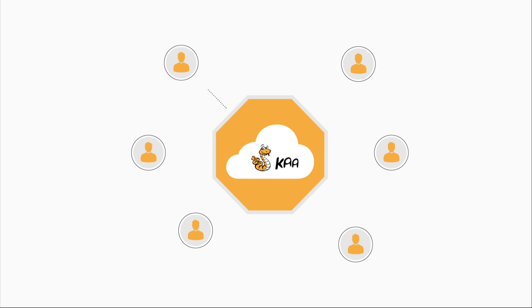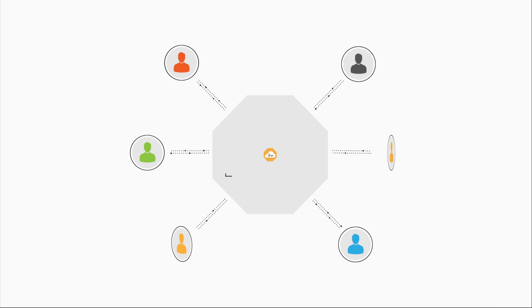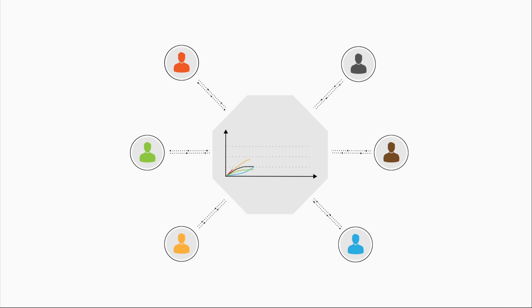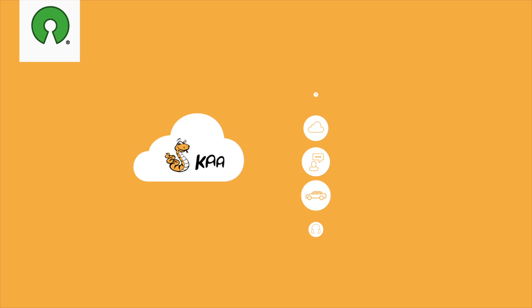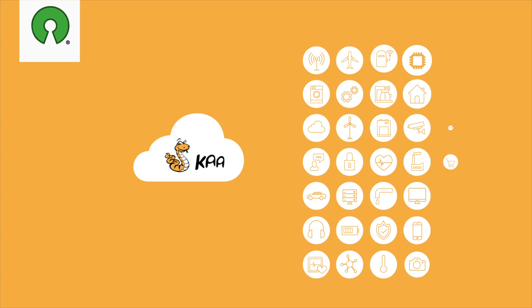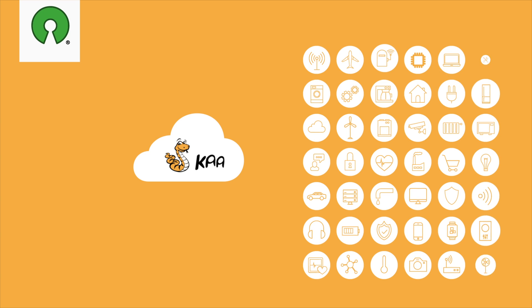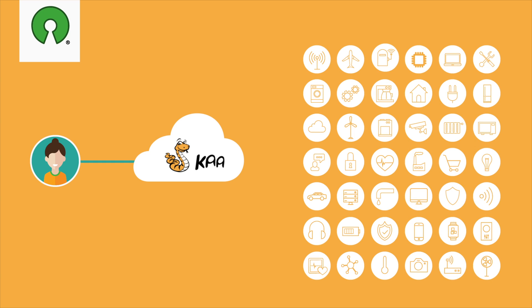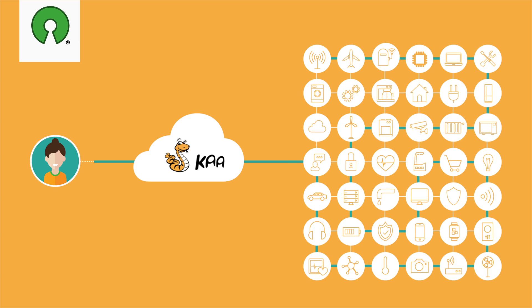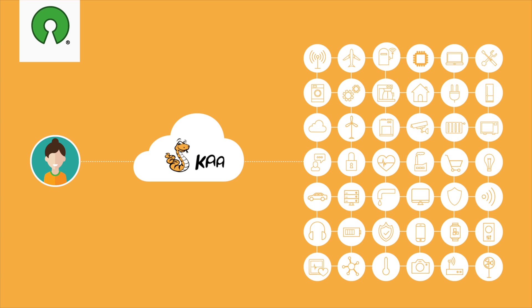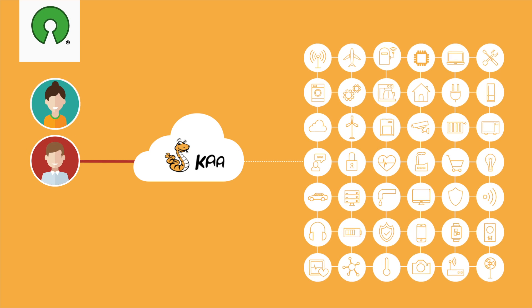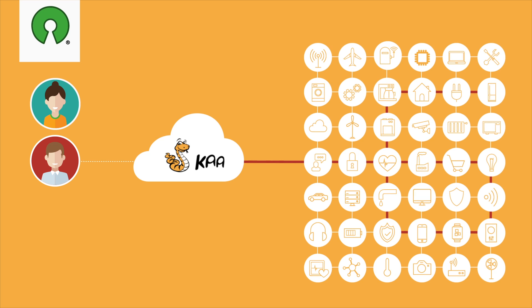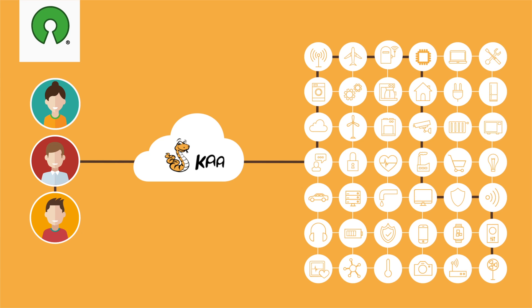The KA IoT platform is the key component for successful IoT projects. KA is a 100% open-source middleware platform for developing and managing complete end-to-end IoT solutions, connected applications, and smart products.